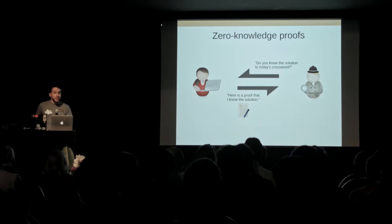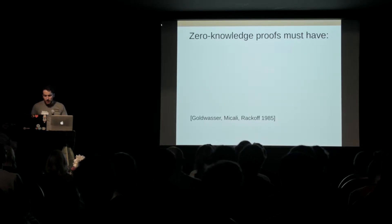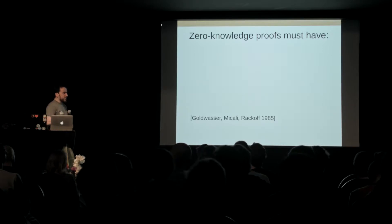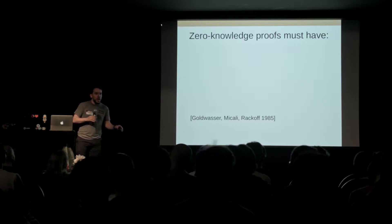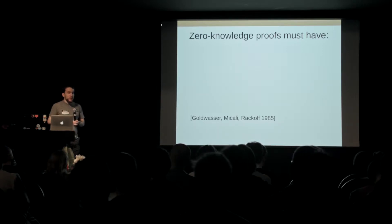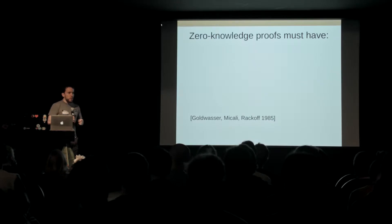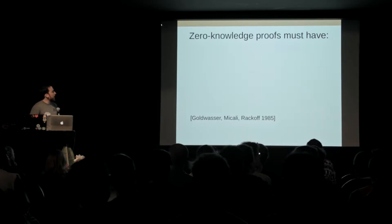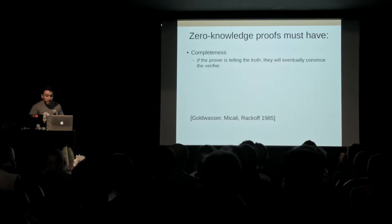This is where zero-knowledge proofs come in. The formal definition was back in 1985 from Goldwasser, Micali, and Rackoff. They were looking at soundness of proofs, essentially verifiers trying to ensure provers couldn't lie to them. Then they flipped it on its head and asked: what happens if the verifier is malicious and you want to make a proof without giving any information away? So they formally defined that a zero-knowledge proof must have certain properties — specifically completeness.